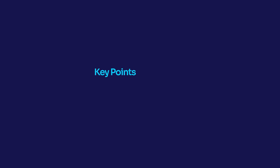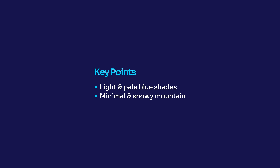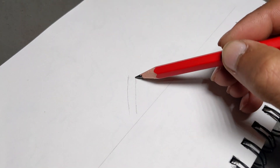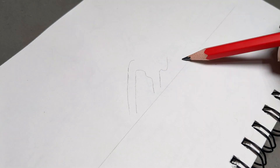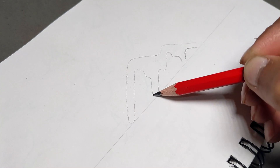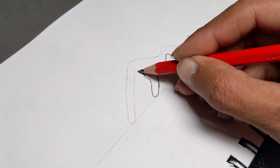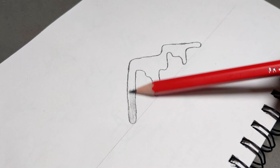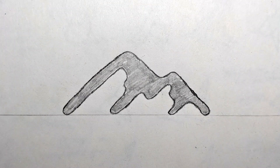The key points from the brief: first, the client is interested in white and pale blue shades. Second, the client's personal preference is to use a minimal snowy mountain that utilizes rounded edges. So keeping the second point in mind, let's sketch a minimal snowy mountain. I simply took a picture from my mobile and now we will utilize this sketch to design our logo with the help of the golden ratio.